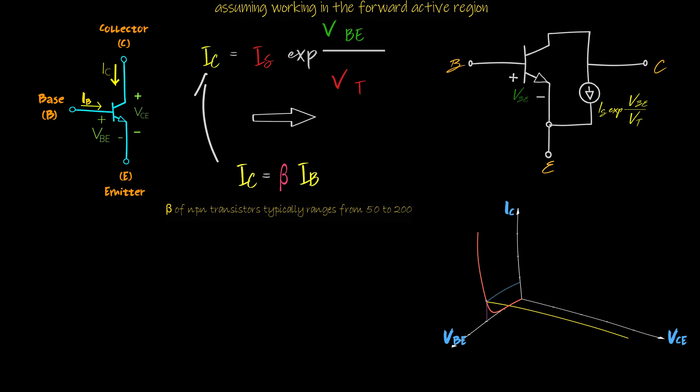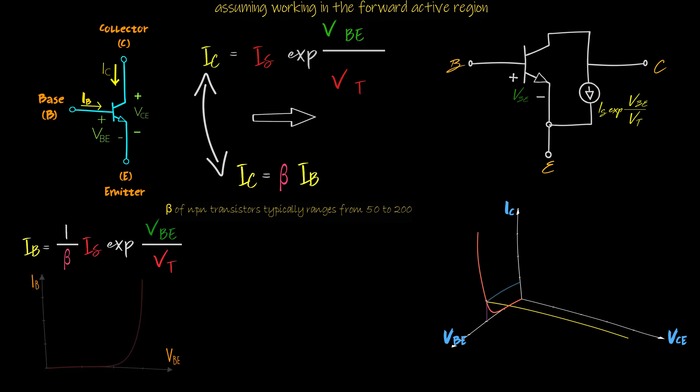Substituting the collector current equation, the base current is also varying exponentially with the base-emitter voltage. Unlike the collector current, the base current depends on the voltage across it, so we can't consider it as a current source. It looks like a resistor whose current is changing exponentially with respect to the voltage across it — a non-linear resistor.